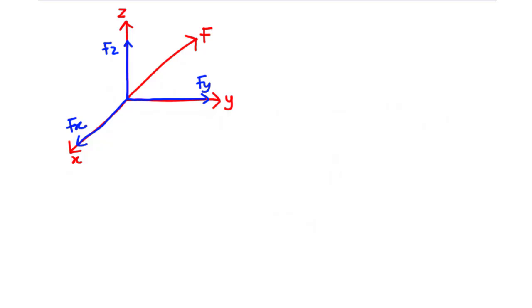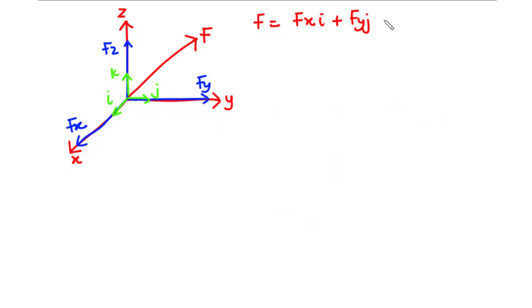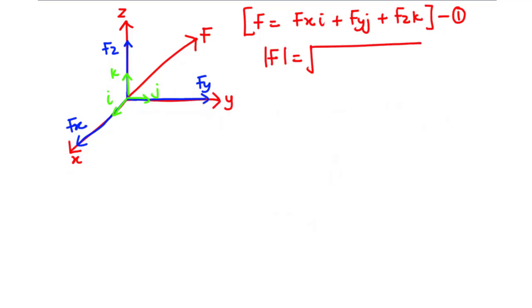The Cartesian unit vectors i, j, and k are used to designate the directions of the x-axis, the y-axis, and the z-axis respectively. Therefore, the force vector F can be represented in the Cartesian vector form as F equals Fx·i plus Fy·j plus Fz·k — let's call this equation 1. The magnitude of F is given by the square root of Fx squared plus Fy squared plus Fz squared — let's call this equation 2.